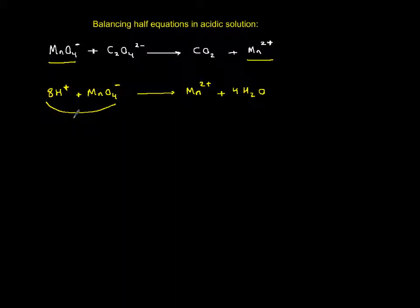On the reactant I have eight positive plus one minus which is a total of seven positive charges. On the product side only Mn contributes and there are two pluses. In order for seven to equal two, I'm going to add five electrons to the left hand side. Therefore, this is reduction and MnO4^- in this case is the oxidizing agent.